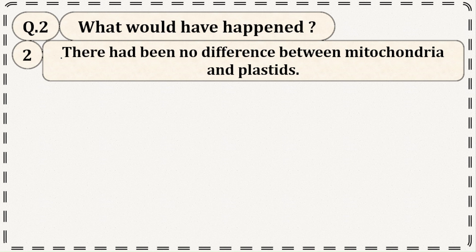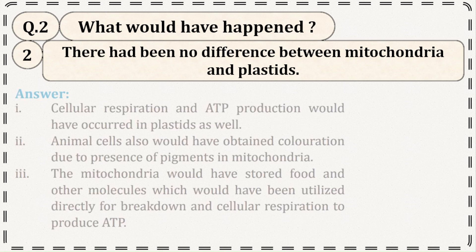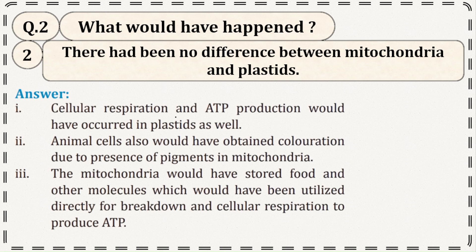What if there had been no difference between mitochondria and plastid? Cellular respiration and ATP production would have occurred in plastids as well. Animal cells would have obtained coloration due to the presence of plastids, which could be utilized directly for breakdown and cellular respiration to produce ATP. Mitochondria would also have stored food and other molecules for breakdown and ATP production.